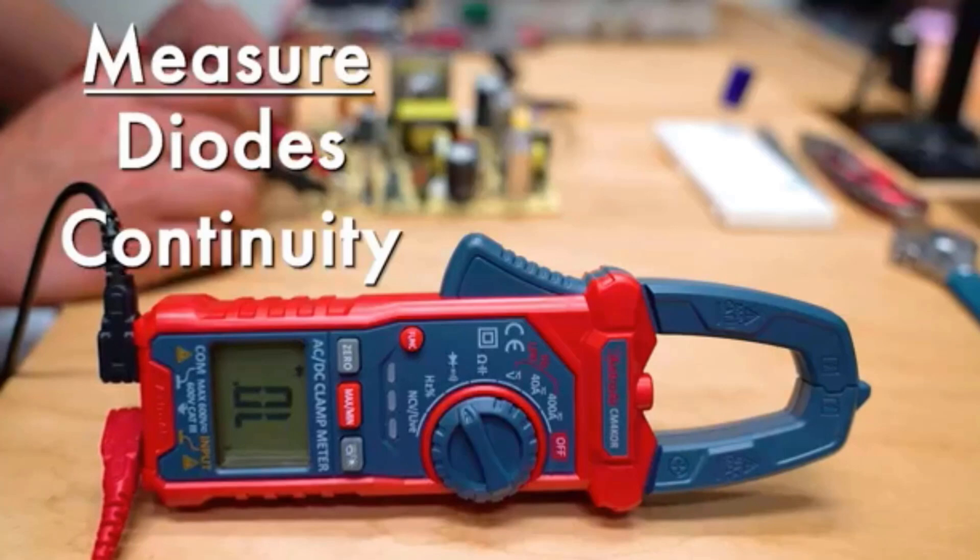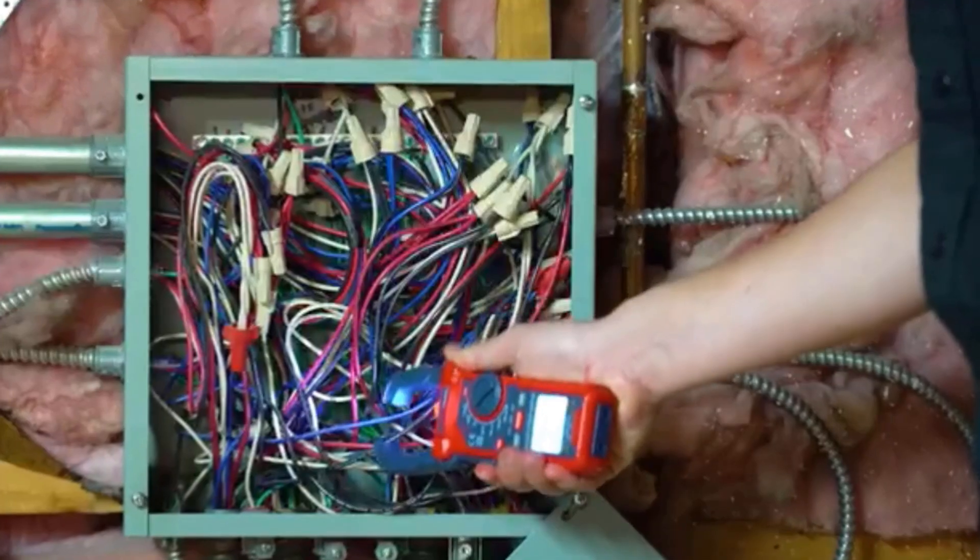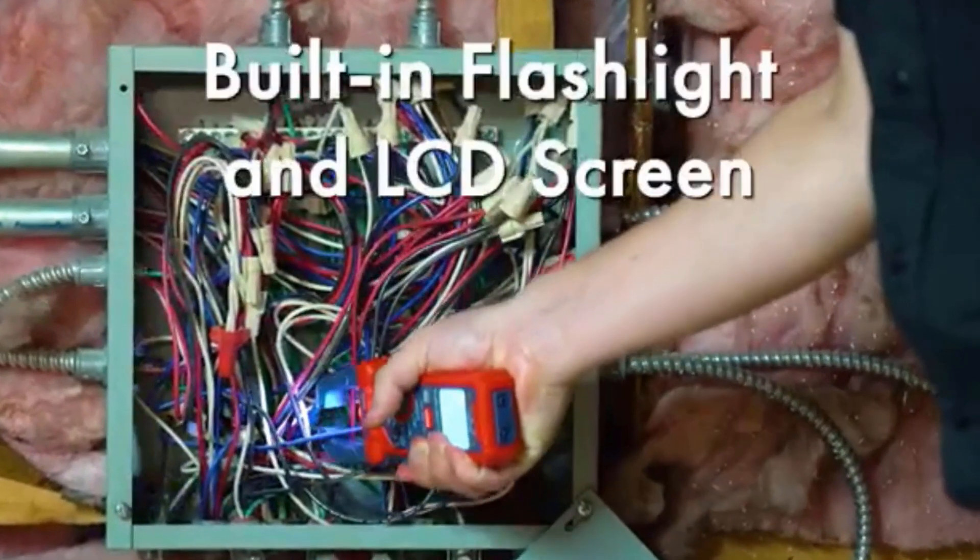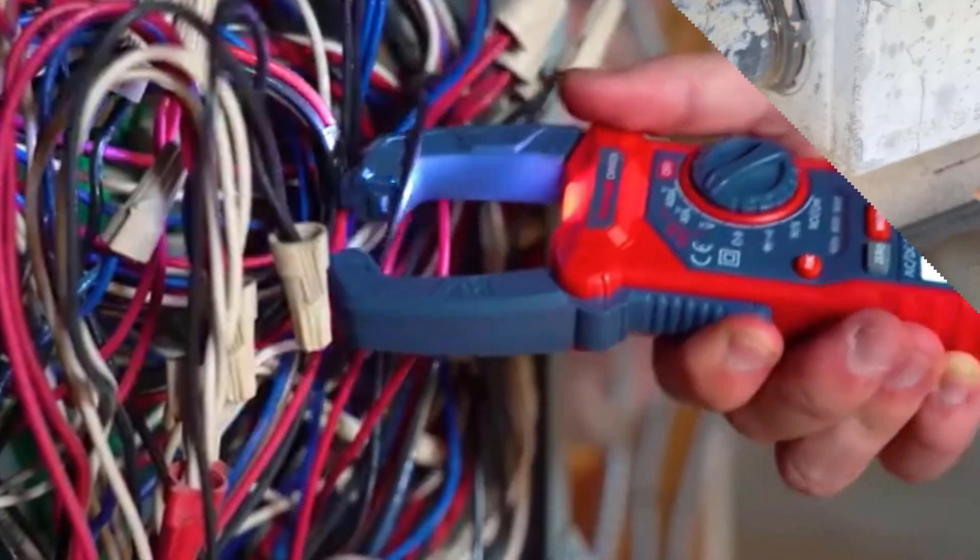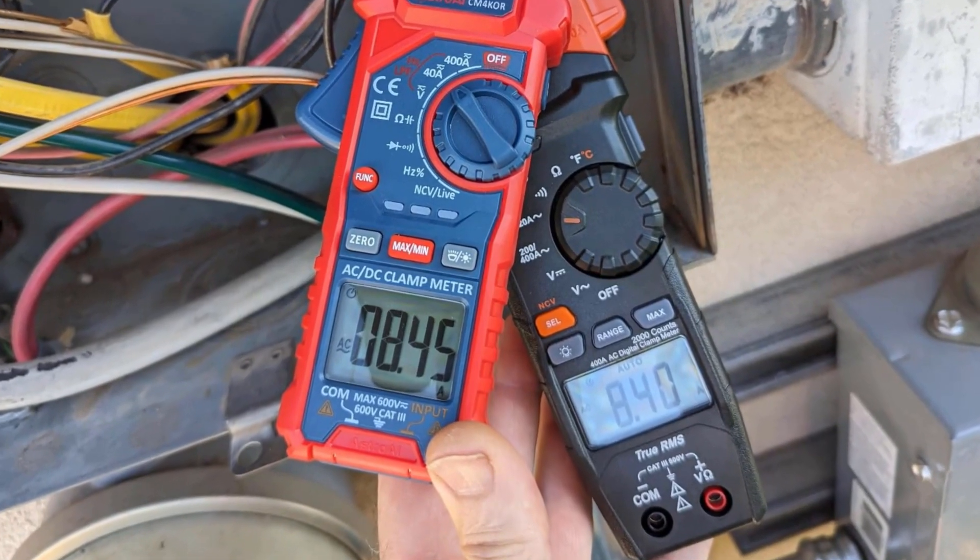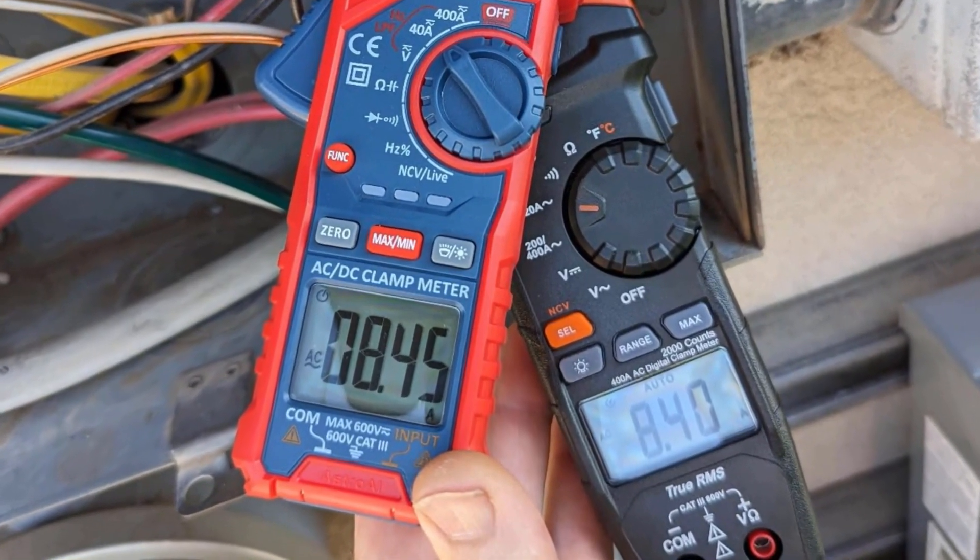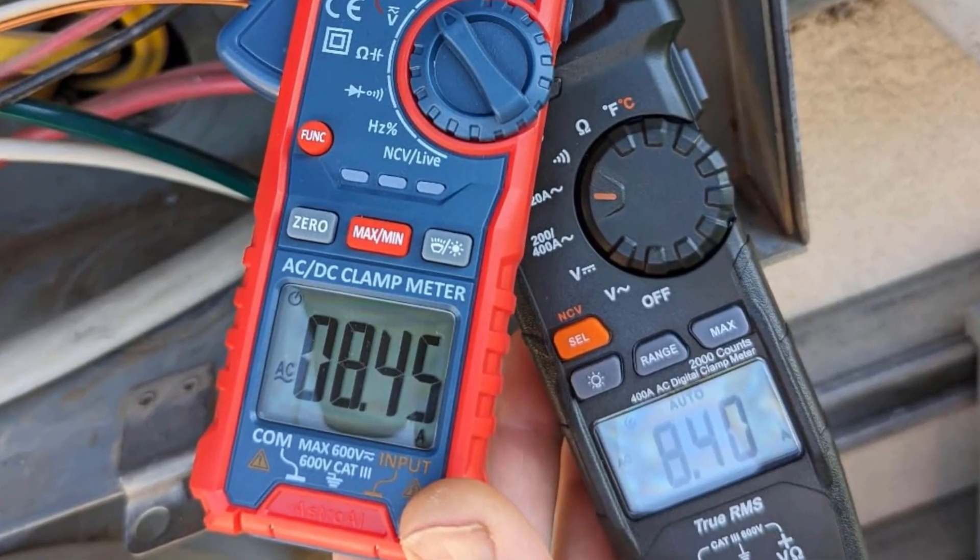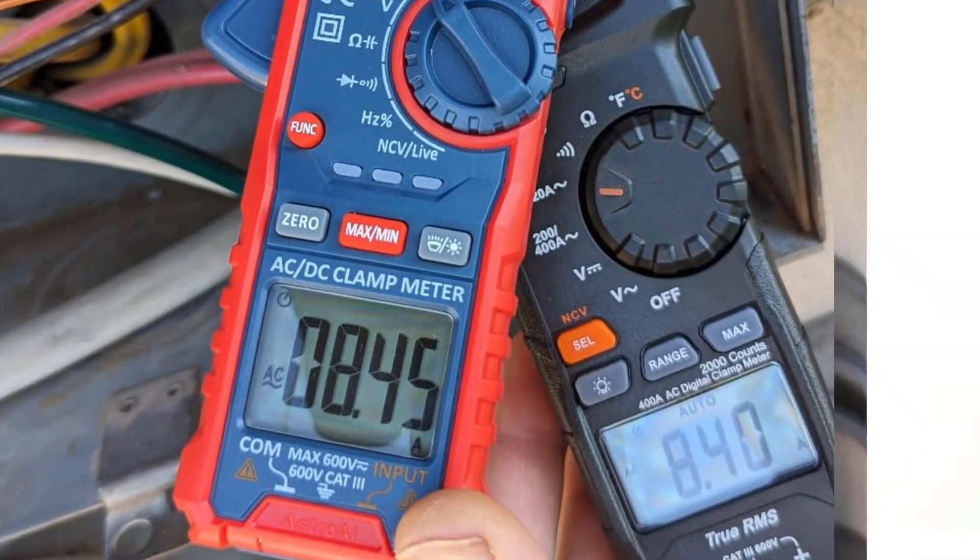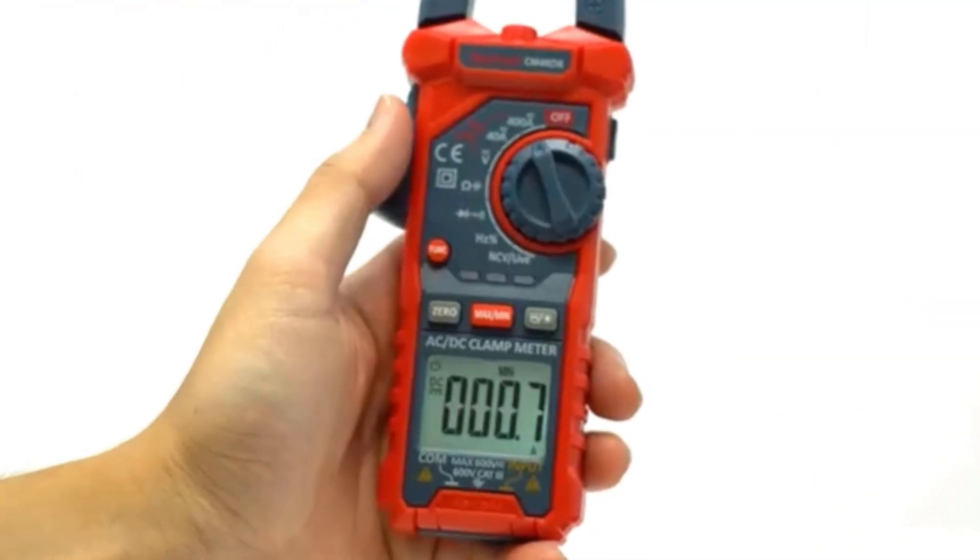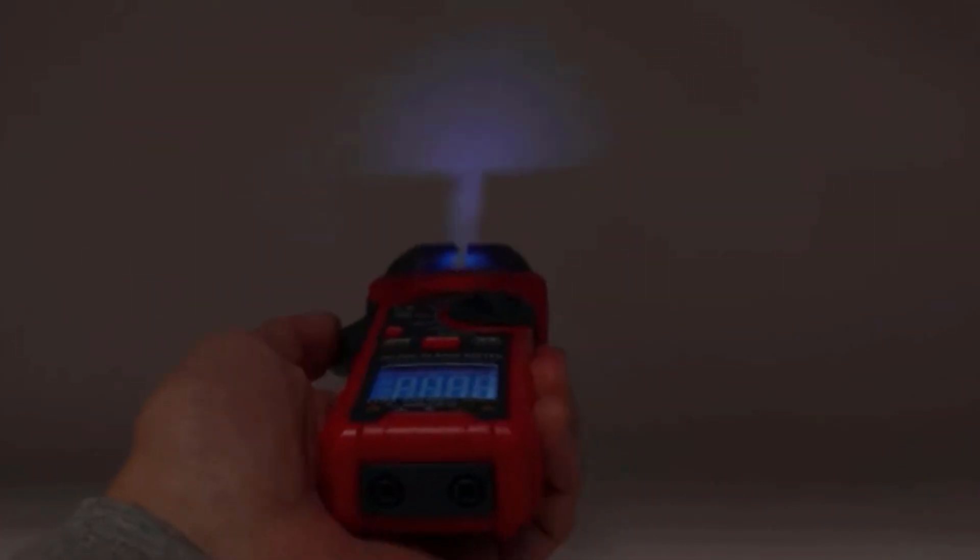This clamp meter measures AC-DC current up to 600A and AC-DC voltage up to 600V, ensuring precise performance across various applications. It also supports resistance measurement up to 40M ohms, capacitance up to 400F, and frequency up to 10 kHz, offering comprehensive diagnostic capabilities.